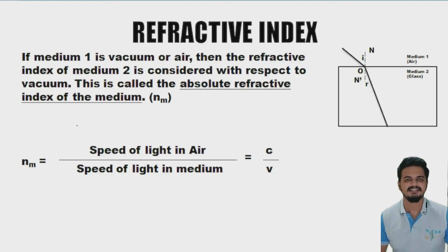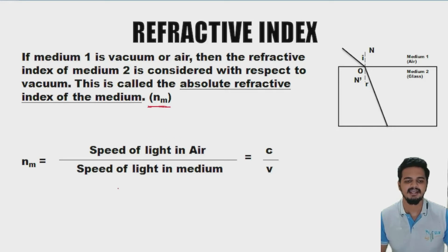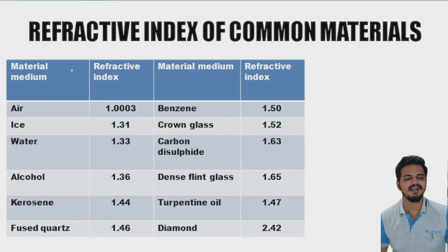Most of the time we take medium 1 as air, because air has a very low refractive index. In this case, the refractive index of medium 2 is considered with respect to vacuum. This is called the absolute refractive index of the medium, represented as nm, and is given by: nm equals speed of light in air divided by speed of light in the medium, which is c divided by v.